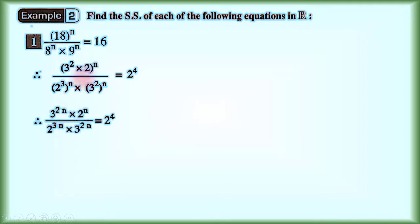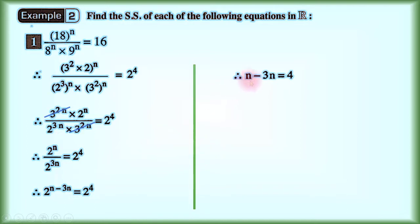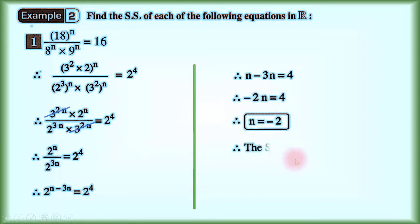Expanding: 3 power 2n times 2 power n, over 2 power 3n times 3 power 2n, equals 2 power 4. We can cancel 3 power 2n in the numerator and denominator. This leaves 2 power n over 2 power 3n. Because the bases are equal, we subtract the powers in division: 2 power (n minus 3n) equals 2 power 4. Because the bases are equal, the powers are equal: n minus 3n equals 4, so negative 2n equals 4, therefore n equals negative 2. The solution set is {negative 2}.